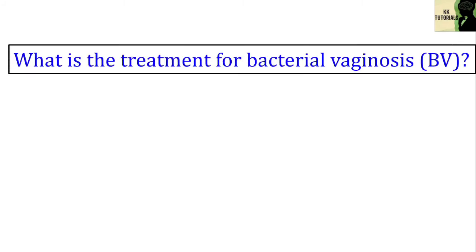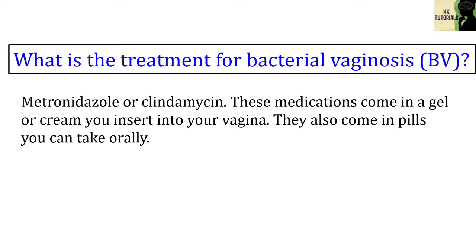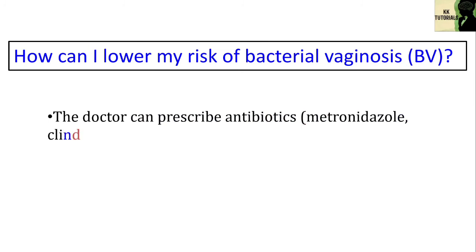What is the treatment for bacterial vaginosis? Your doctor will prescribe antibiotics, typically metronidazole or clindamycin. These medications come in a gel or cream you insert into your vagina, or in pills you can take orally. You will need to take most treatments for 5 to 7 days. Finish all your medicine even if the symptoms go away — if you stop early, the infection could come back.